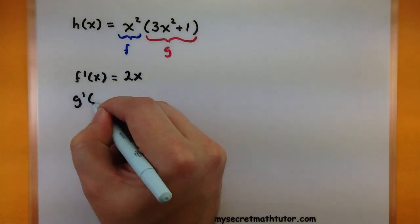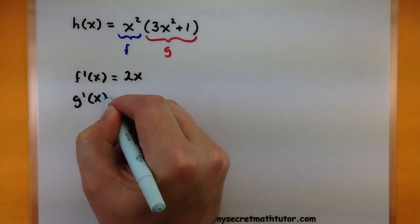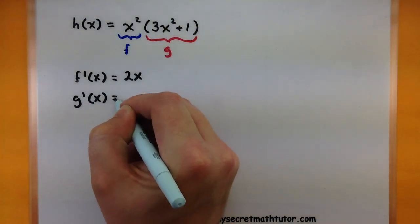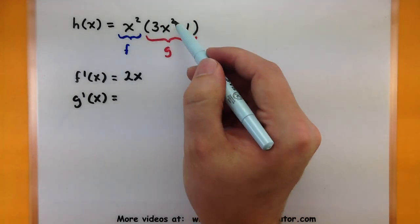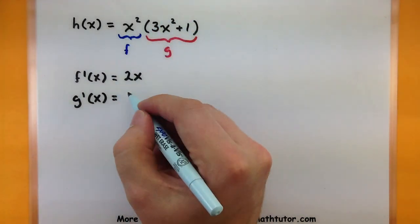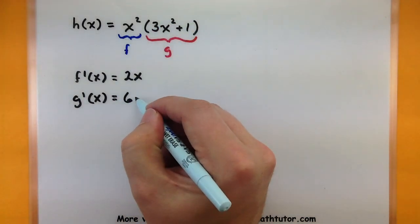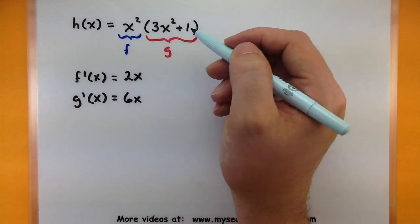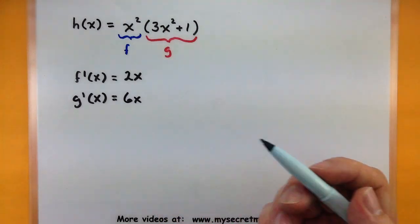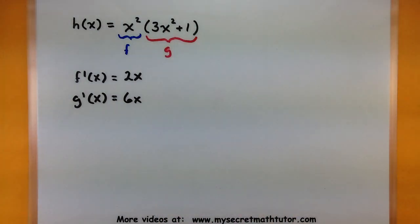Now let's figure out what is the derivative of g. Taking the derivative of 3x squared gives us 6x, and the derivative of 1 is 0. So the derivative of g is 6x. Now I have both of my derivatives.